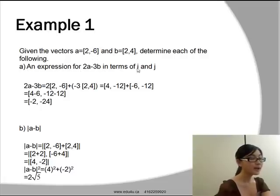An expression for 2a-3b in terms of i and j. i is the unit vector for the x-axis and j is the unit vector for the y-axis. 2a-3b = 2[2,-6] + (-3)[2,4] = [4,-12] + [-6,-12] = [-2,-24].